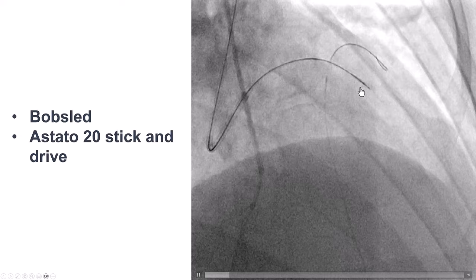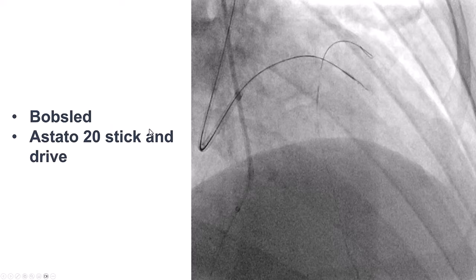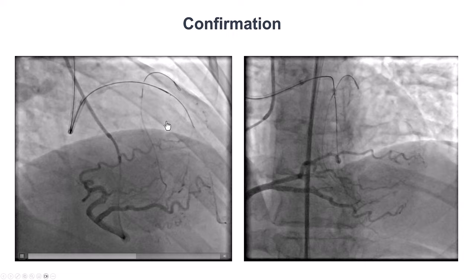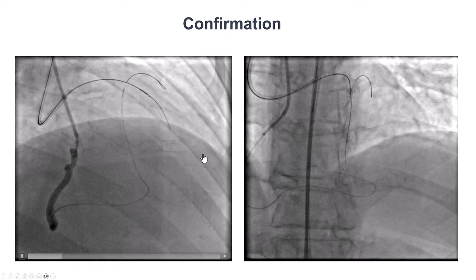Troubleshooting went a little further down. We did the so-called bobsled maneuver, and then used an Astato 20 wire. That seemed to be going in the right direction, and during the contralateral injection, we tried to advance the guidewire slightly — it appeared to be going along the course of the vessel.